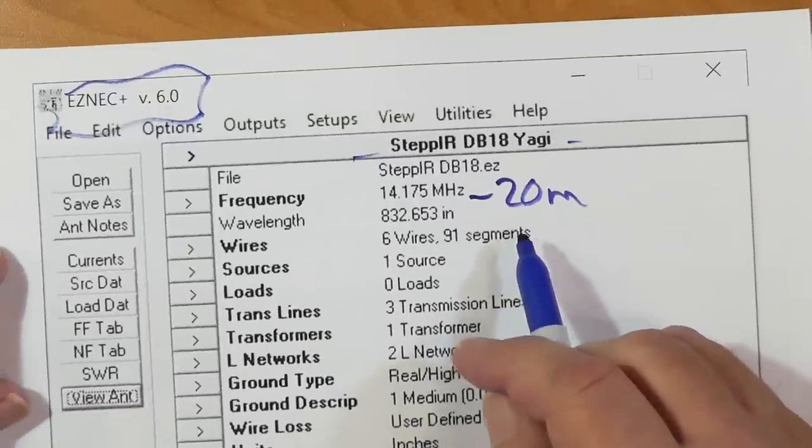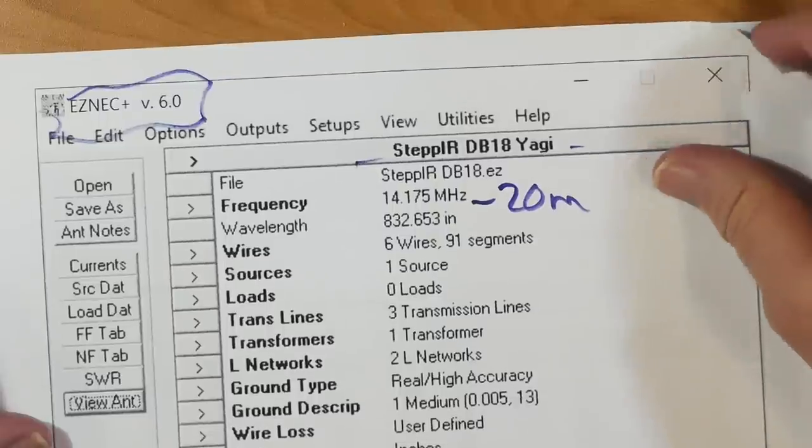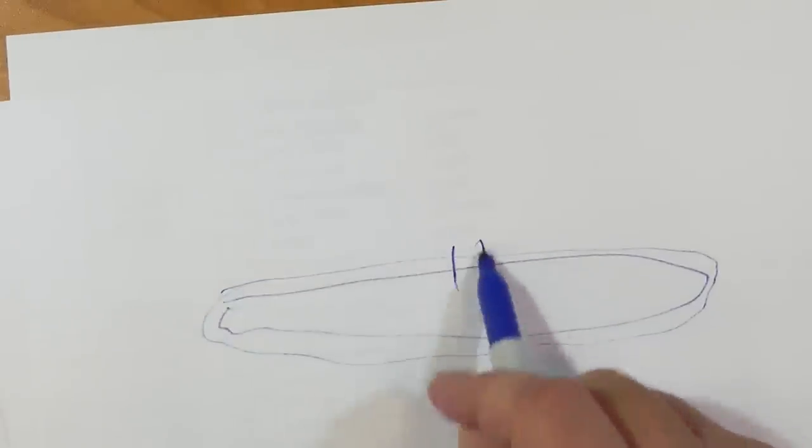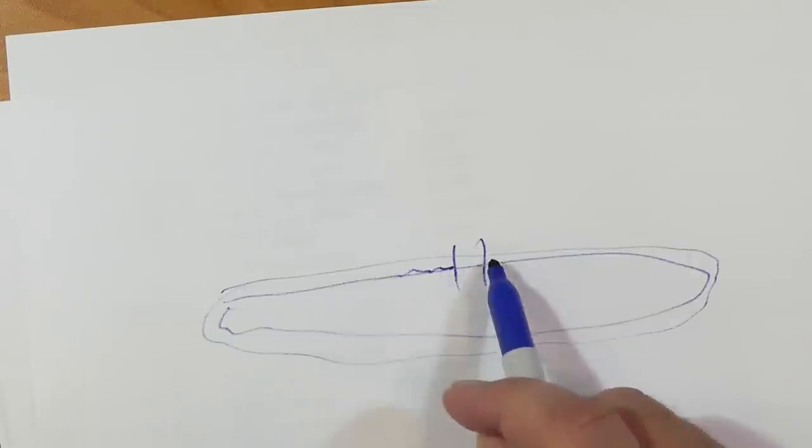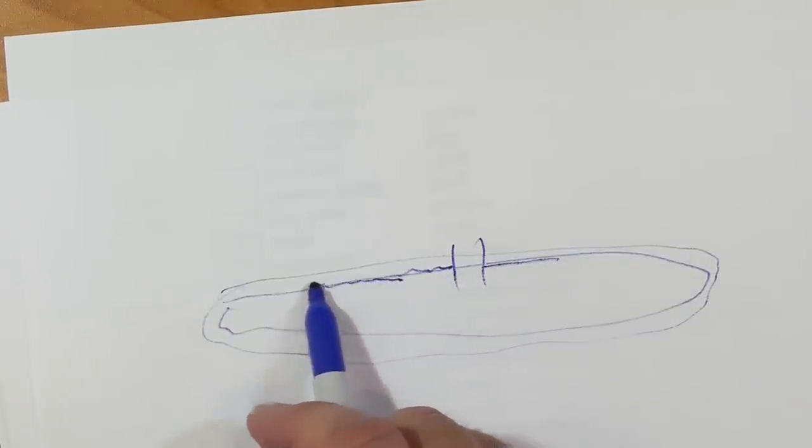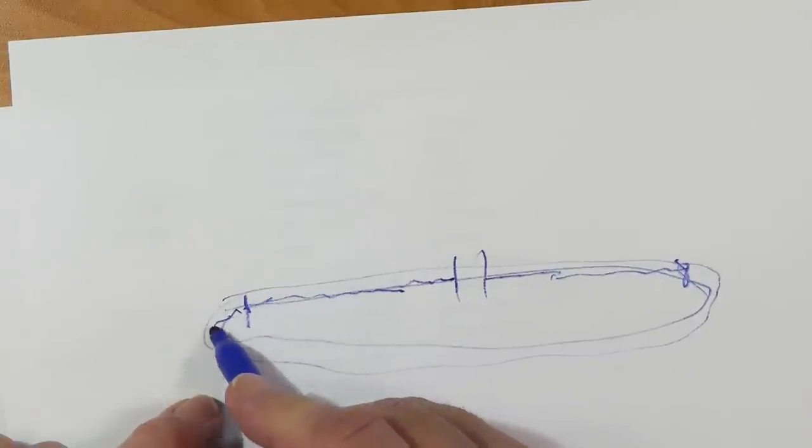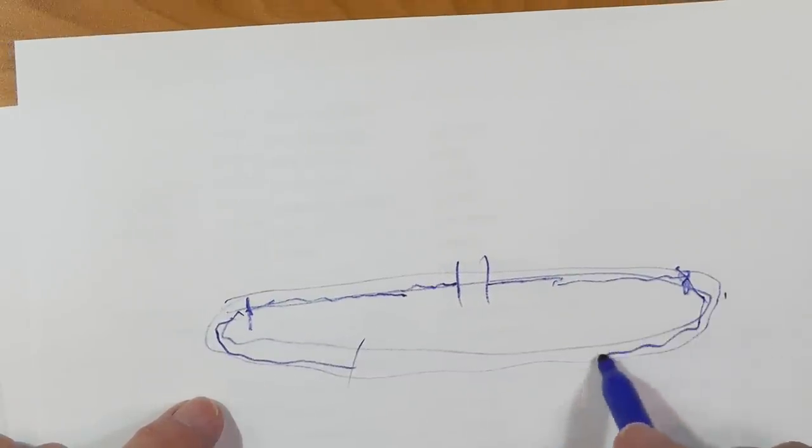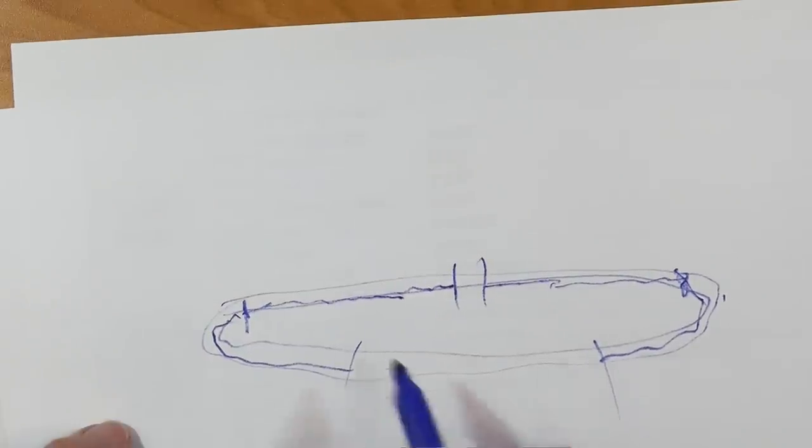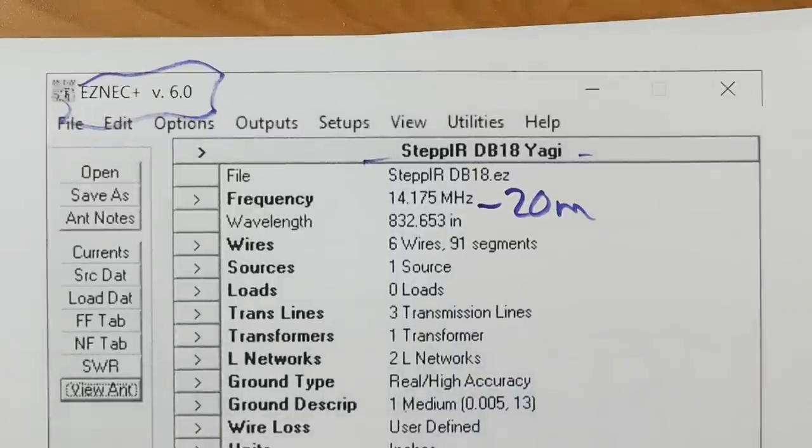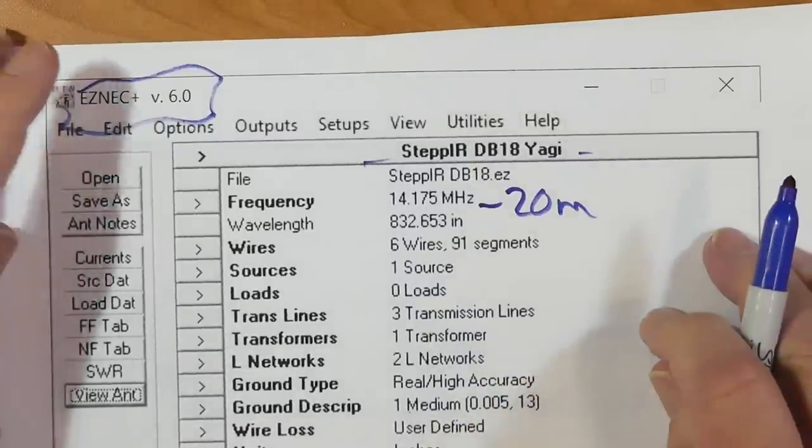It's 20 meters. Now, note that the way a StepIR works, it's got a circular tube. Actually, it's got two of these, and a little stepper motor and a copper tape that is pushed out from here to get to the point where it's the right length. So if you go to 40 meters, this tape will be pushed out over to here and so on, sort of a folded kind of an arrangement. For 10 meters, it just gives it out here.